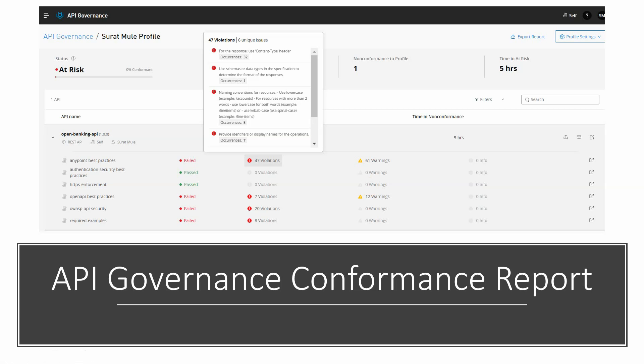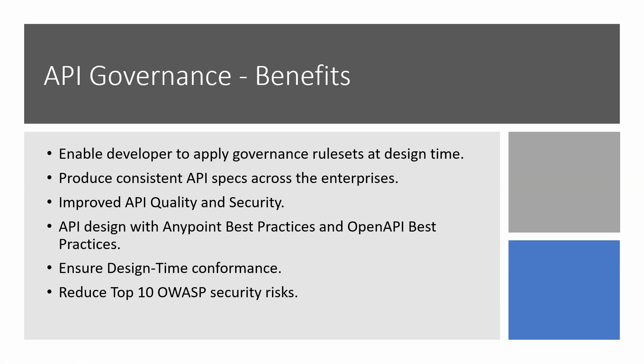Once you publish the API to Anypoint Exchange, it will automatically generate a report telling you what passed and what failed, and exactly where the errors are. The benefits of API Governance include enabling developers to apply governance rulesets at design time, producing consistent API specs across the enterprise, improving API quality and security, ensuring design-time conformance, and reducing the OWASP Top 10 security risks such as SQL injection, PHP injection, and mass assignment.